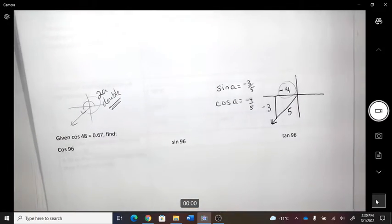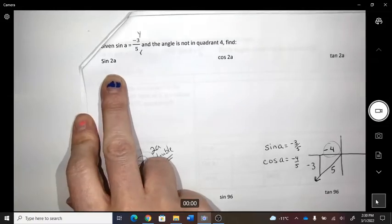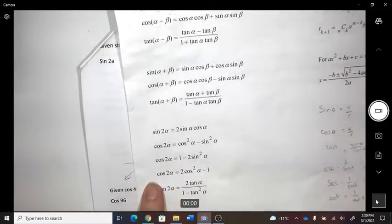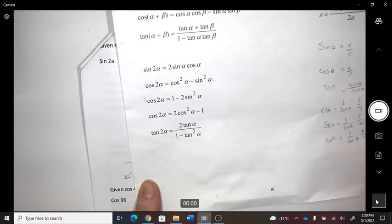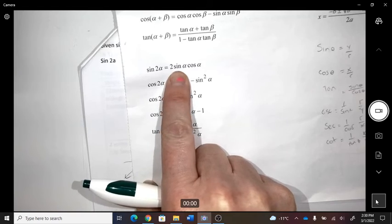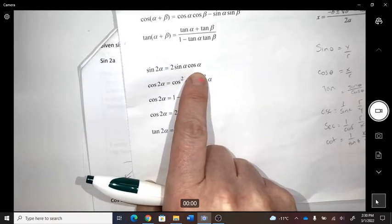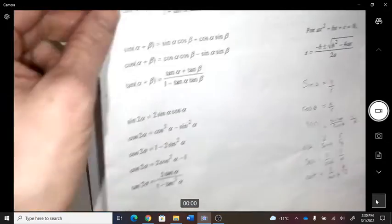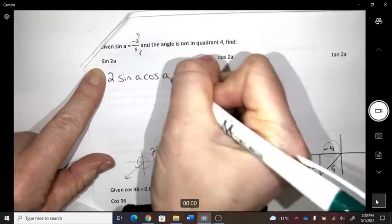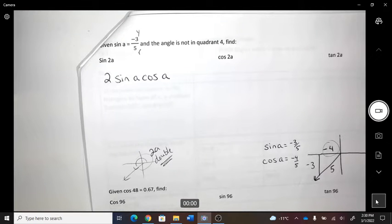Okay, so sine of 2A. We're going to go here to our formula sheet. Sine of 2A, and here's the formula: 2 sine A cos A. That's from the formula sheet. The double angle, that's what we're dealing with. If we doubled the angle A.